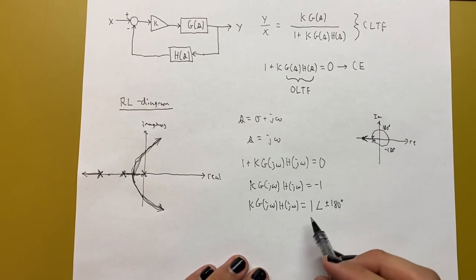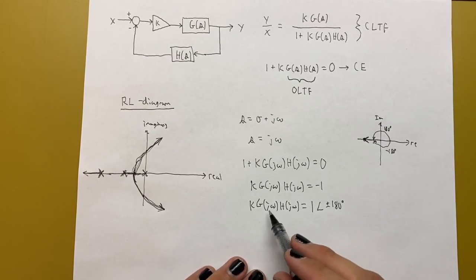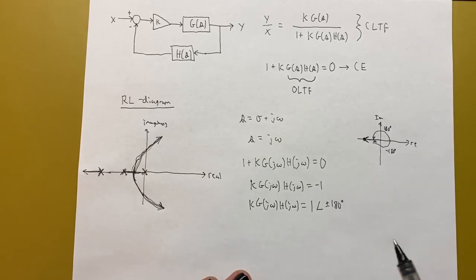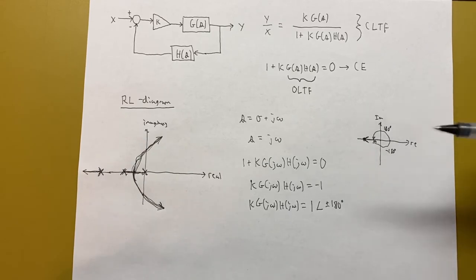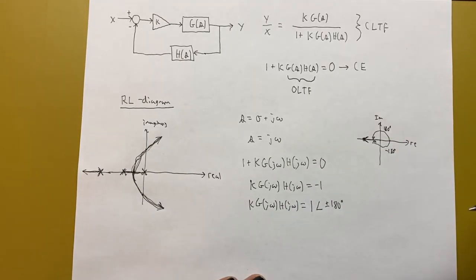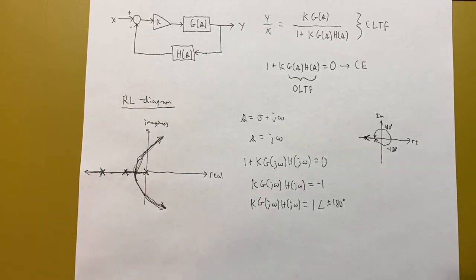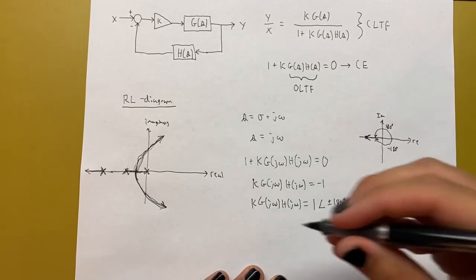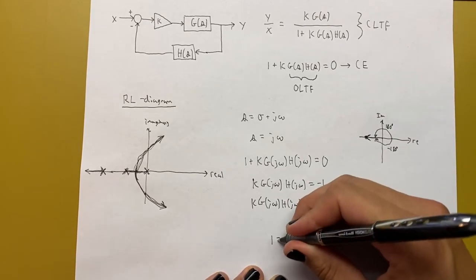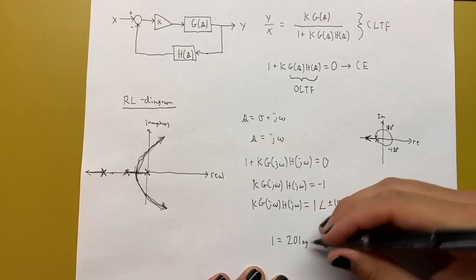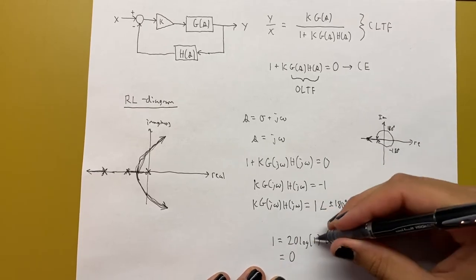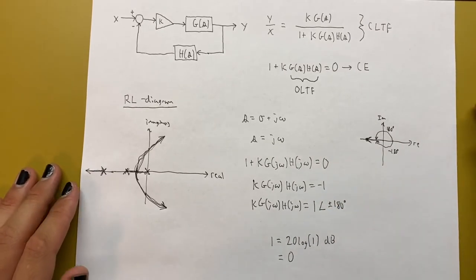Now we have a transfer function in terms of j omega with a magnitude and a phase. When we're concerned about magnitude and phase with something varying with omega or frequency, we tend to look toward Bode plots. Remember that the magnitude part of most Bode plots is in decibels, so let's convert our magnitude of 1 to decibels: 1 is equal to 20 log of 1 decibels, which is just 0 decibels since log of 1 is 0. We'll keep that in mind when drawing these Bode plots.